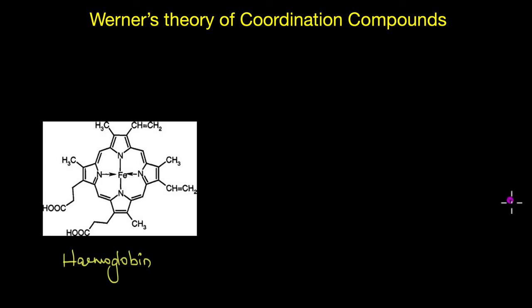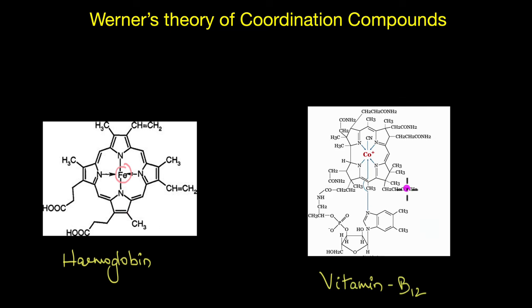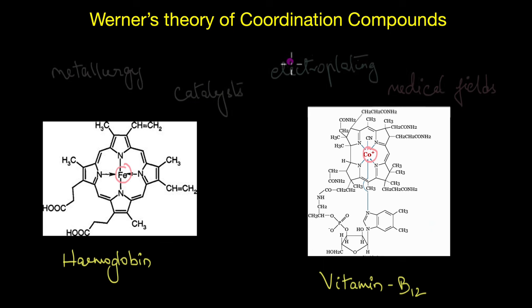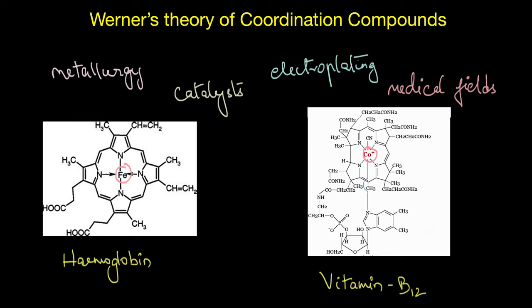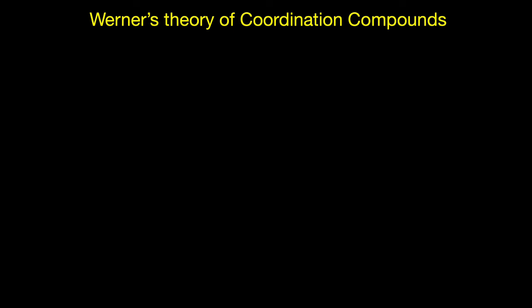Coordination compounds are found everywhere in nature. Hemoglobin in our blood, for instance, is a coordination compound where the metal iron is bonded to a large protein molecule. Similarly, vitamin B12 is another coordination compound that contains the transition metal cobalt. Coordination compounds also find a number of applications in everyday life, like in metallurgical processes, as catalysts, in electroplating, and in medicinal chemistry.